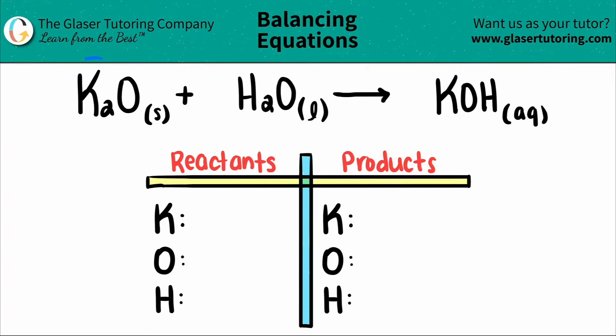Today we're going to be balancing the equation of potassium oxide K2O plus water H2O, which will yield potassium hydroxide KOH.